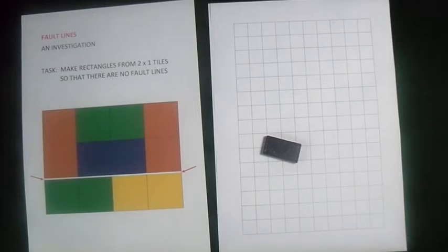The tiles are made up of two squares, like a domino, and I want to make my rectangle so that it has no fault lines. Look, there's a picture here.